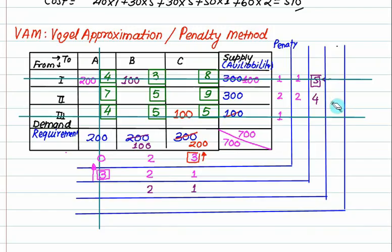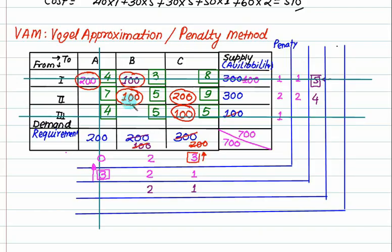Only 2 cells are left, so there is no need for penalty calculation. Check cost 5 and cost 9 — lowest is 5. With only 2 cells remaining, skip the penalty step. Allocate 100 at cost 5, so 200 is recorded. If left with 2 cells, don't compute penalty. How many penalty steps were required? 3 steps for this problem. Check occupancy: 1, 2, 3, 4, 5 — equals m plus n minus 1 equals 5. This is the initial basic feasible solution. Cost: 200 into 4, 100 into 3, 100 into 5, 200 into 9, 100 into 5.